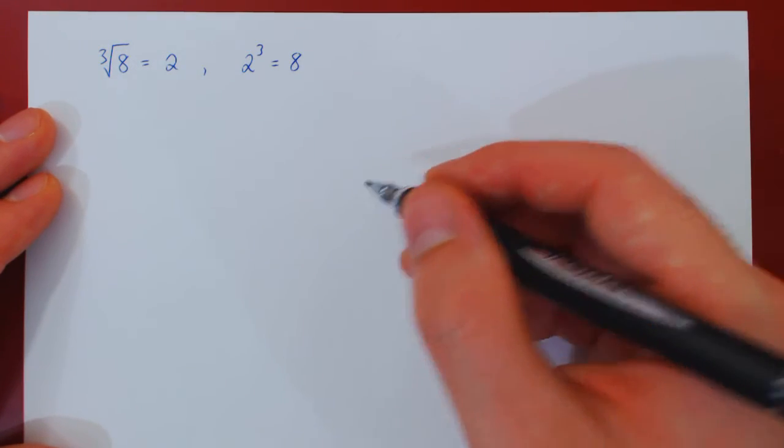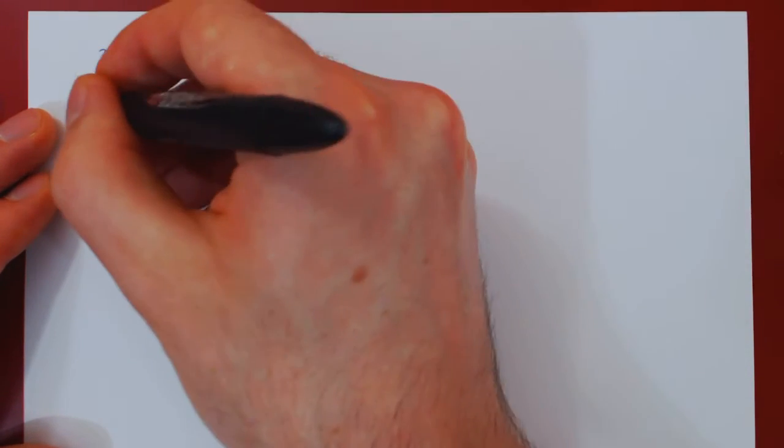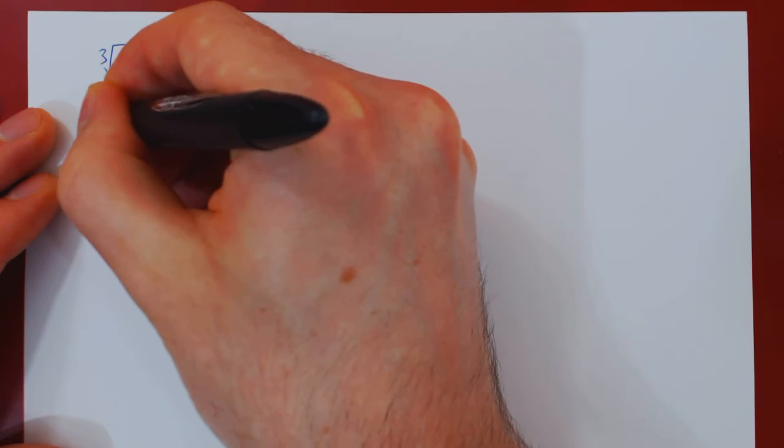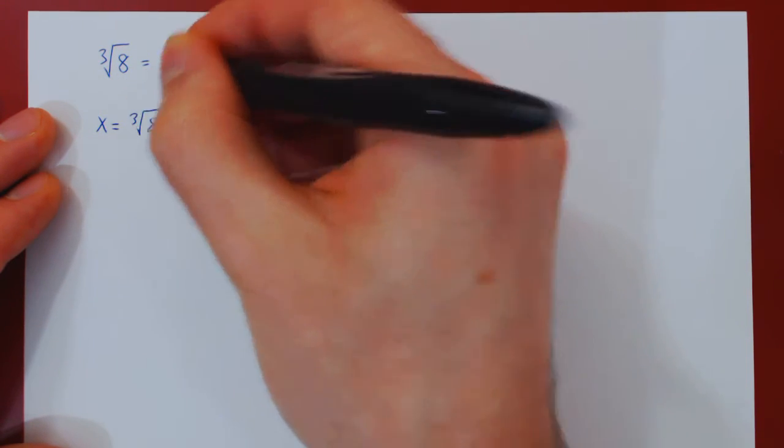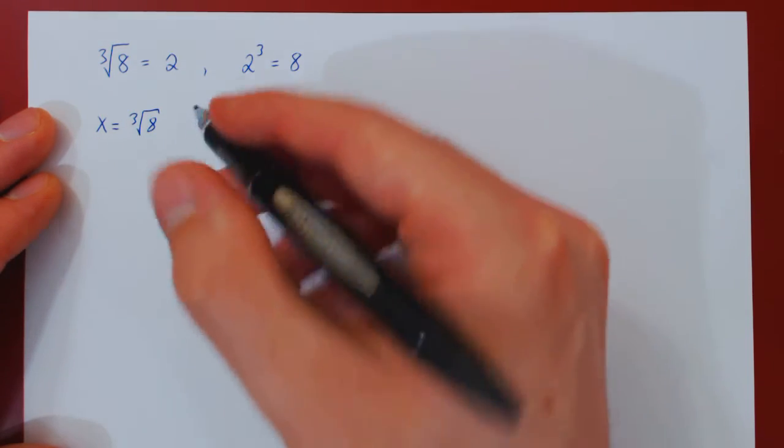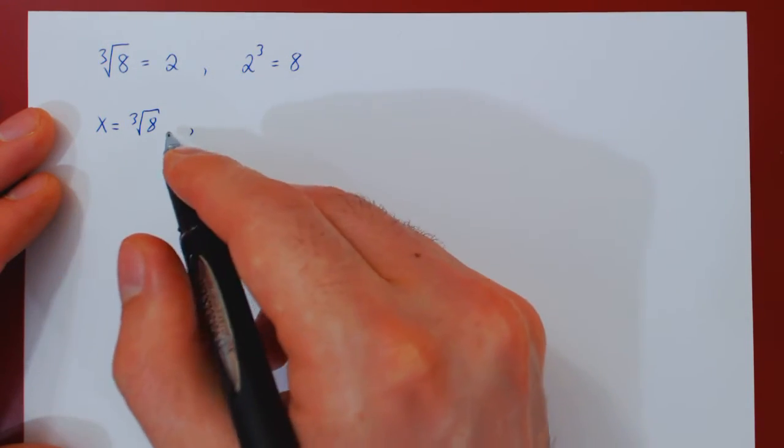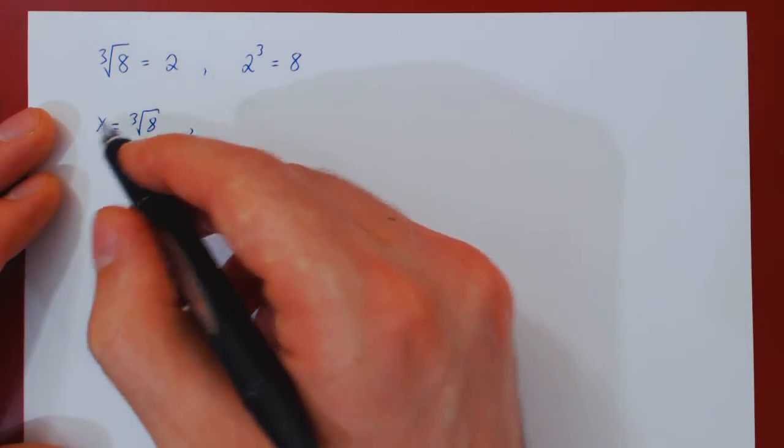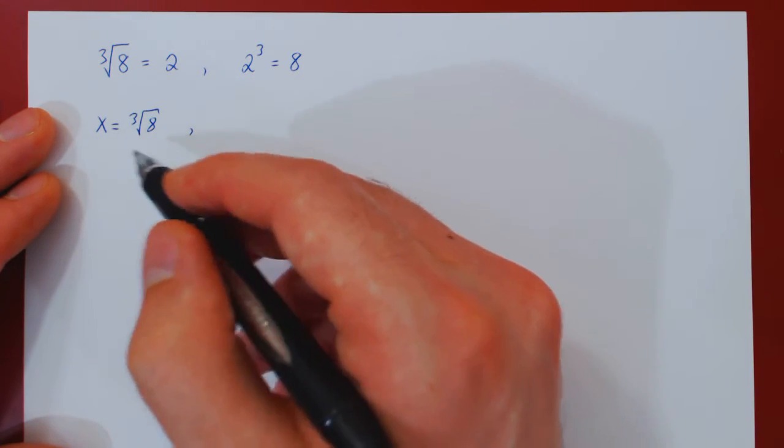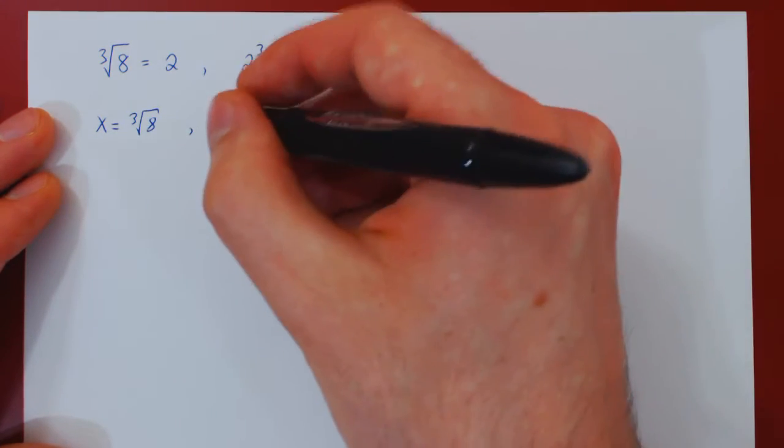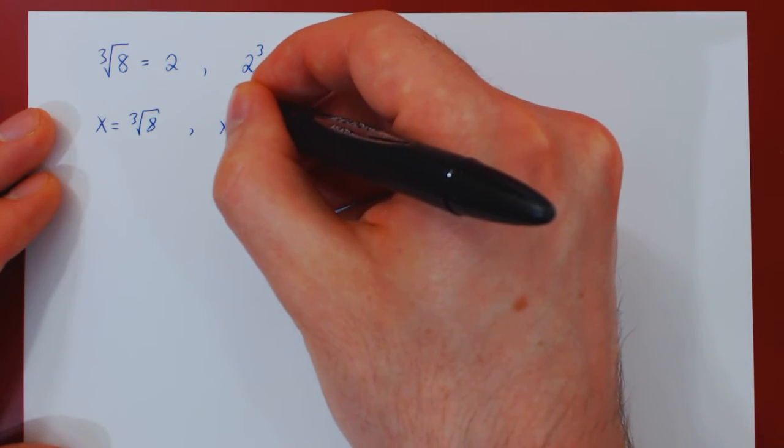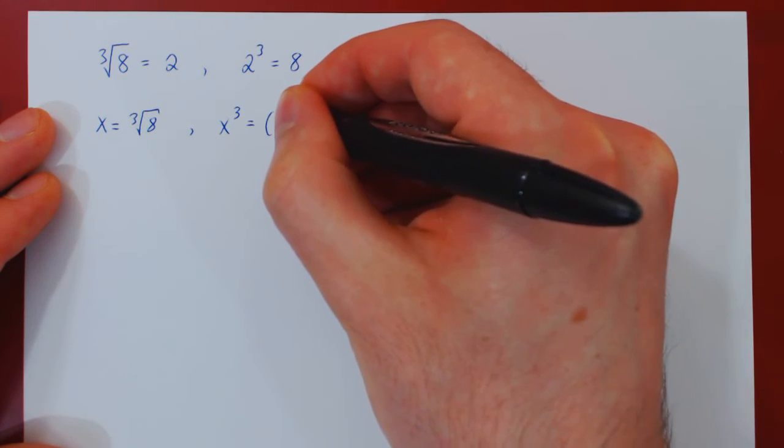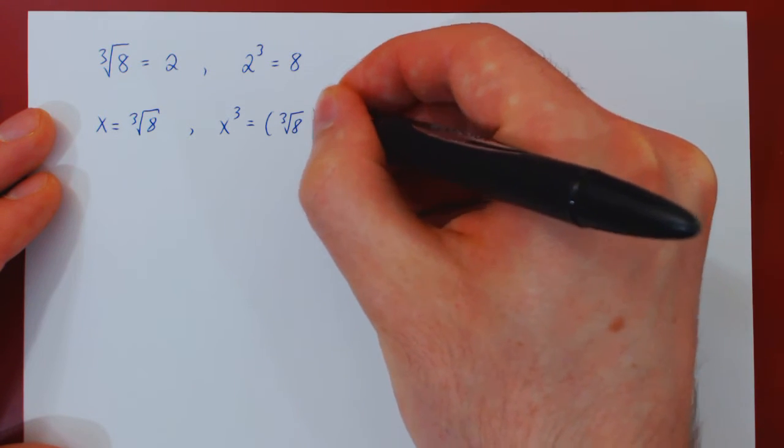And again, you can verify this if you say, well what is the cube root of 8? Well if x is the cube root of 8, we have an equality. So as long as we do the same thing on both sides, we will preserve the equality. So, let's cube both sides. So if x is the cube root of 8, then x cubed will equal the cube of the cube root of 8.